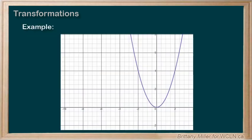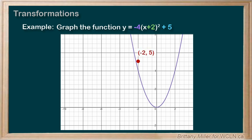Let's do one more example. Y equals negative 4 times x plus 2 squared plus 5. If you want to try this one on your own, pause the video now. So this parabola has been moved up 5 and then 2 units to the left. We know it's the left because we see x plus 2 in the brackets. Our new vertex is negative 2, 5.